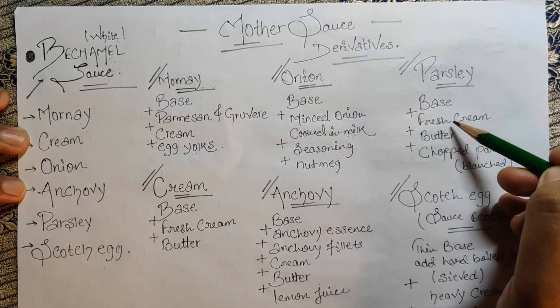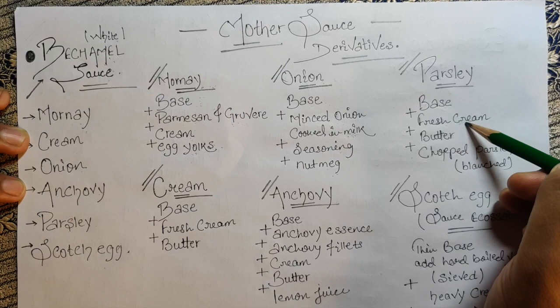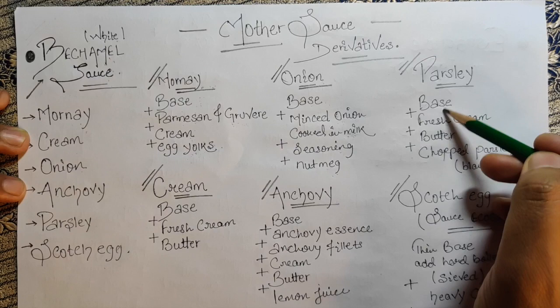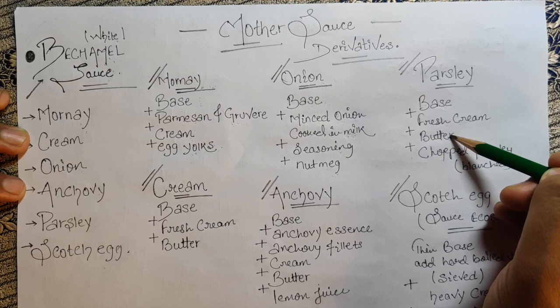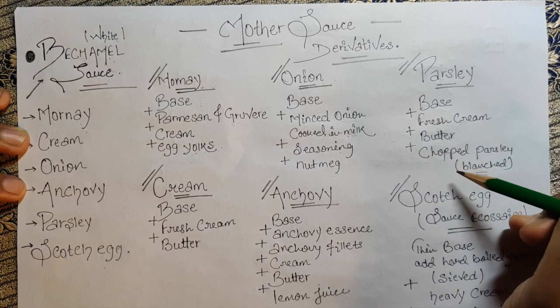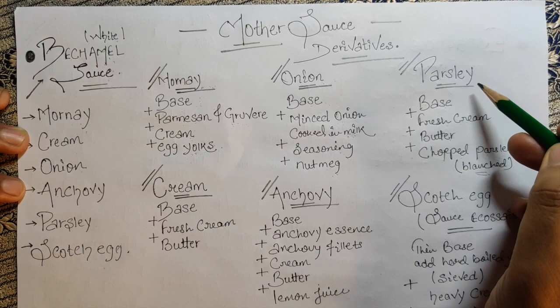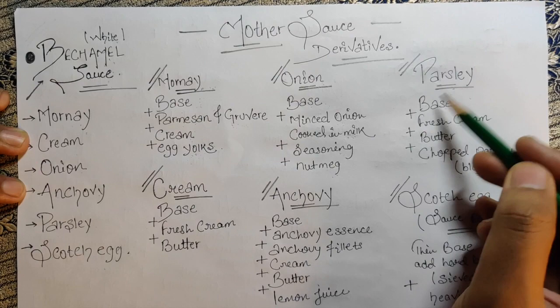For parsley sauce: the base is béchamel, then add fresh cream. When butter is added, we use it off-heat — just to give a nice silk and shine to your sauce. Add a chunk of butter to the combination for a velvety finish. Then add chopped parsley — always blanch your greens first, then chop, then add to the sauce. That is a basic rule.